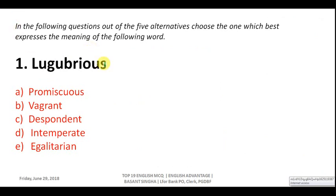Question number one: find the correct synonym of the given word. Vocabulary is extremely important for banking exams — asked not only in the reading comprehension section but also independently. The word here is 'lugubrious,' which means someone who is very depressed.